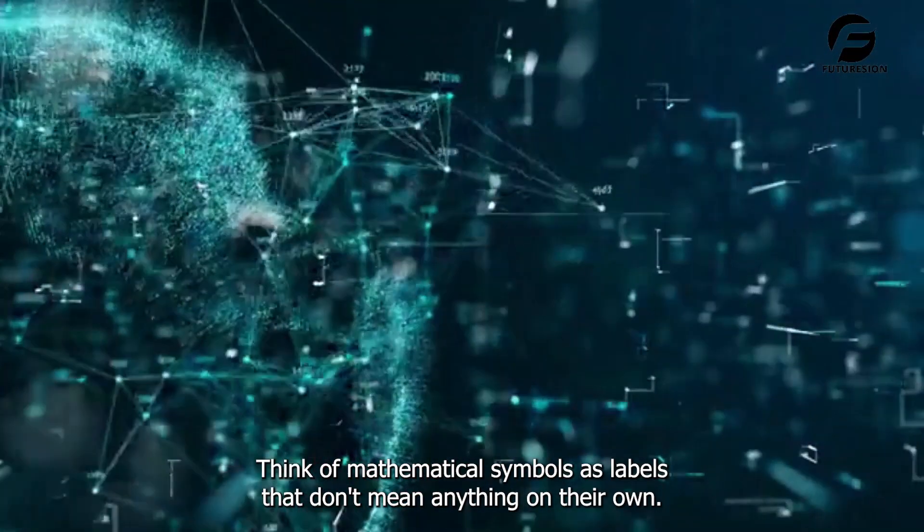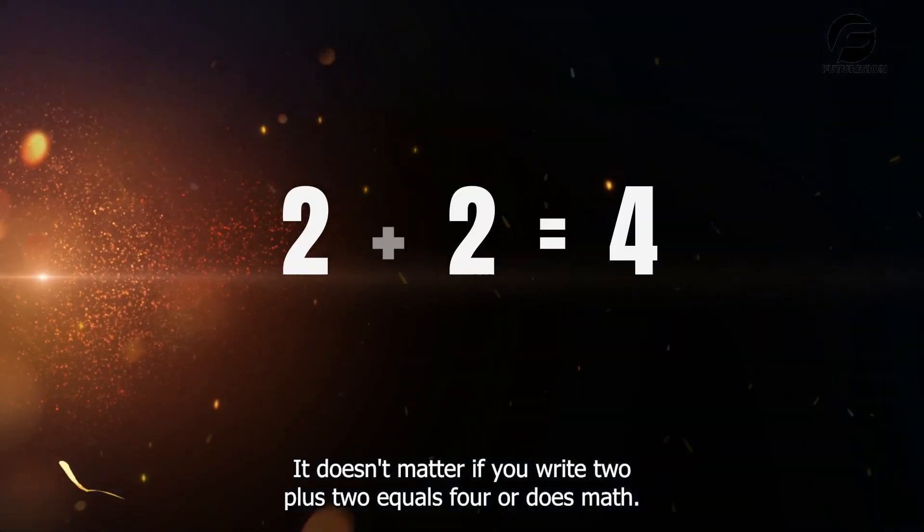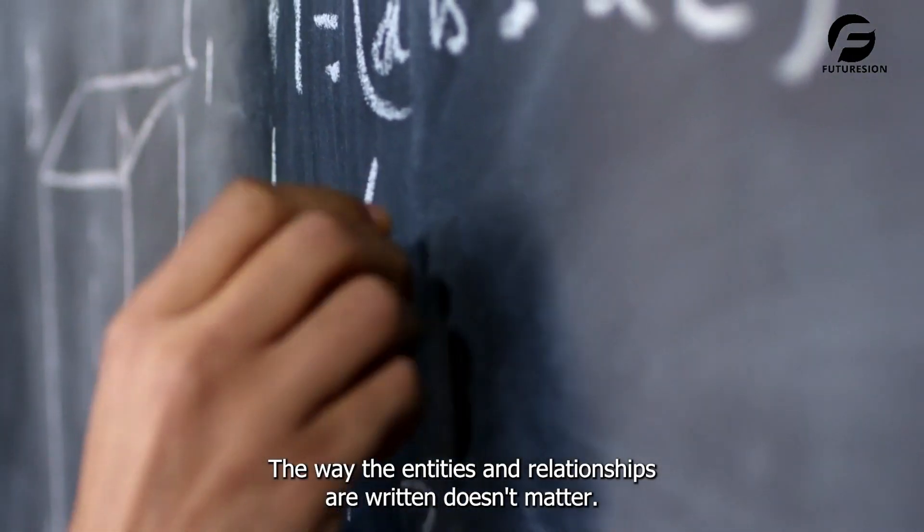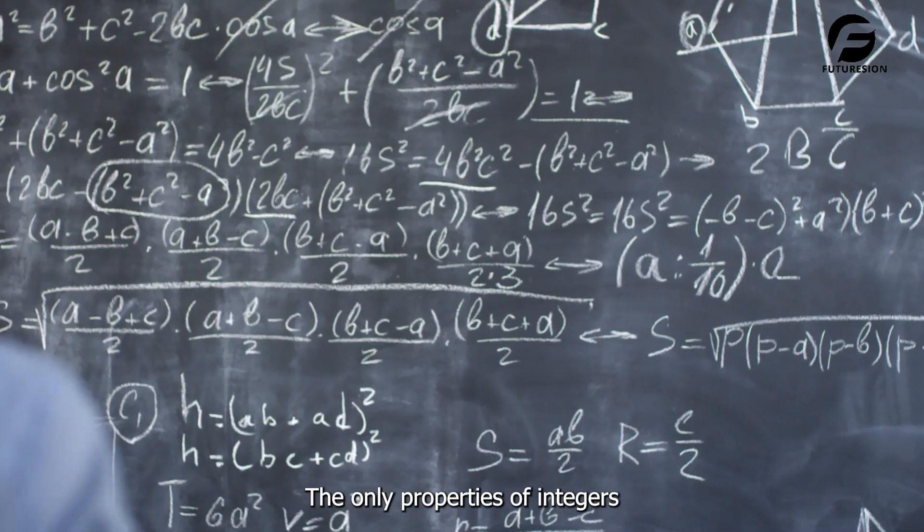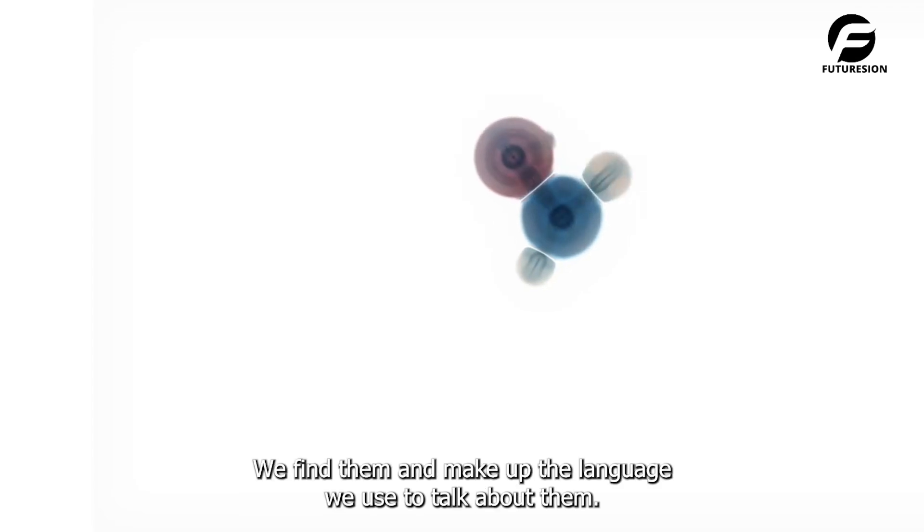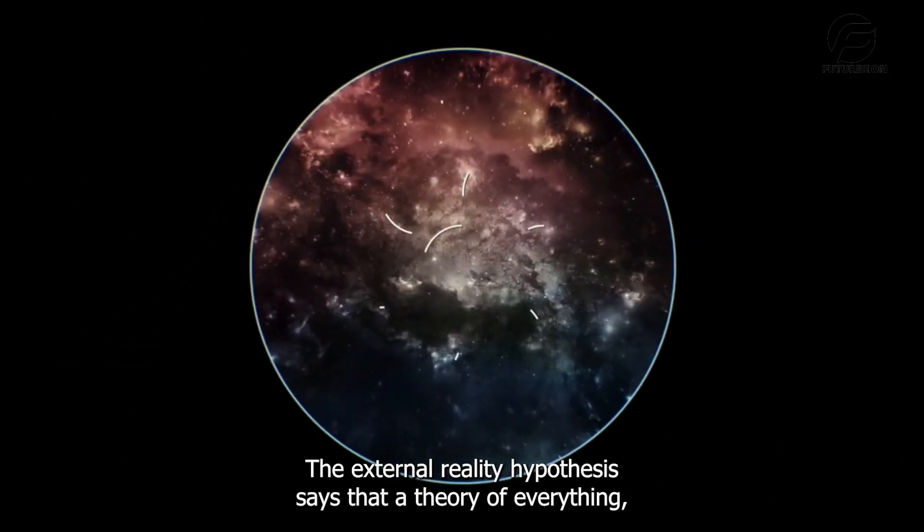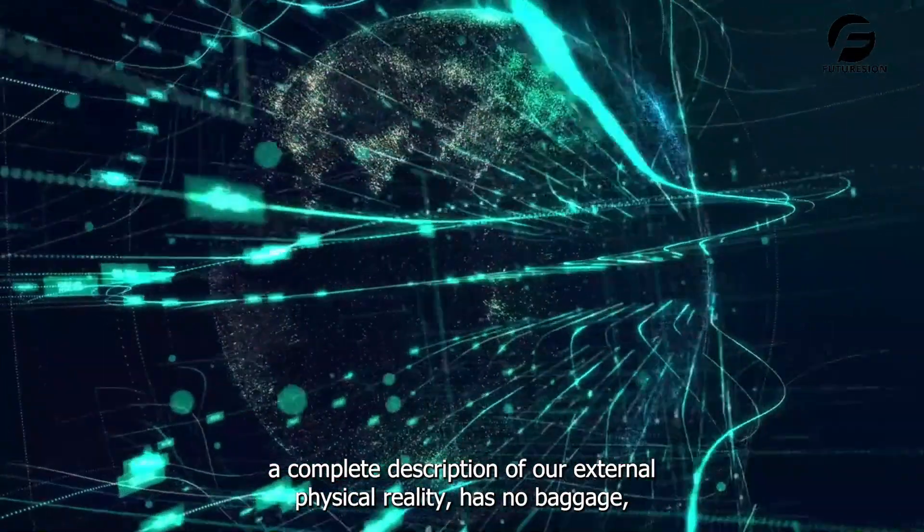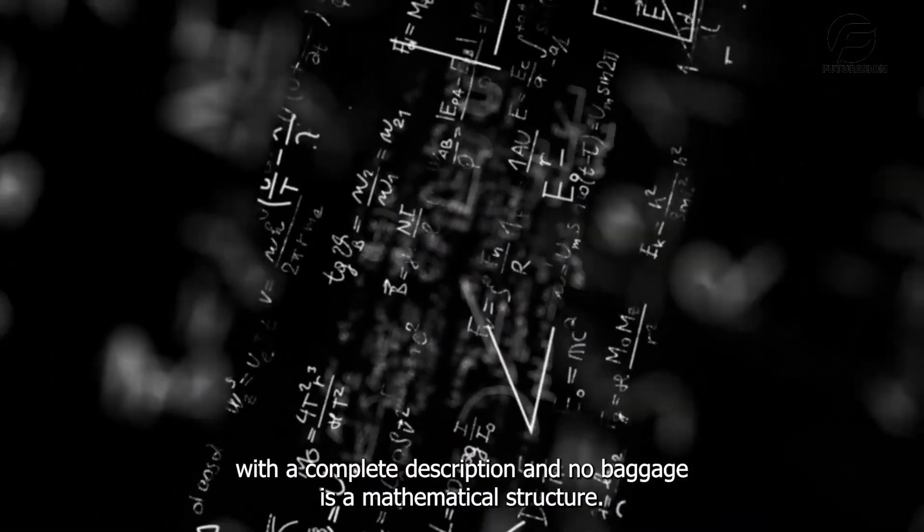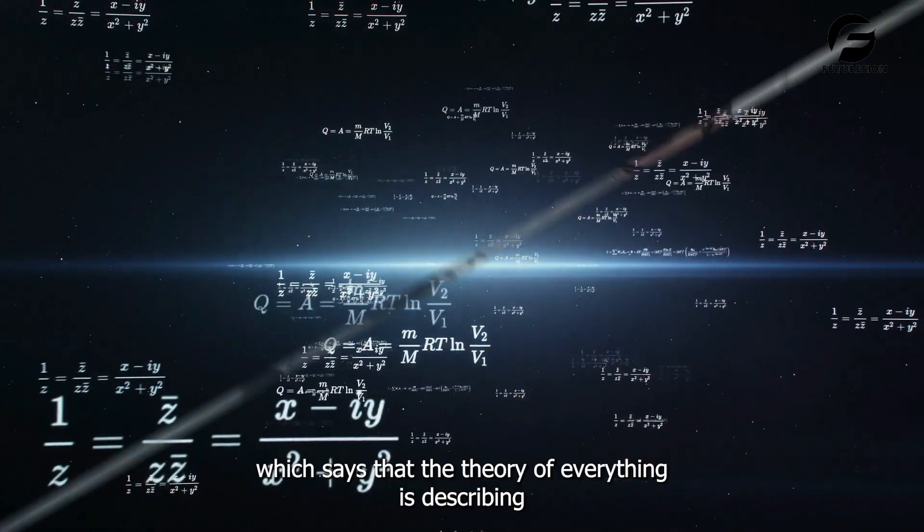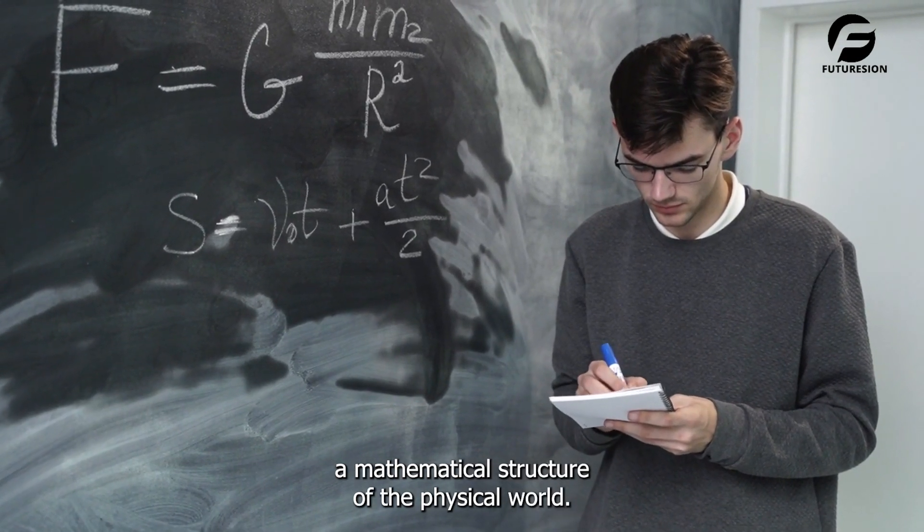Think of mathematical symbols as labels that don't mean anything on their own. It doesn't matter if you write 2 plus 2 equals 4, or 2 math dot igual a 4. The way the entities and relationships are written doesn't matter. The only properties of integers are those that are shown by the relationships between them. That is, we don't make up mathematical structures. We find them and make up the language we use to talk about them. In short, there are two main things to remember. The External Reality Hypothesis says that a Theory of Everything, a complete description of our external physical reality, has no baggage, and that something with a complete description and no baggage is a mathematical structure. All of this points to the Mathematical Universe Hypothesis, which says that the Theory of Everything is describing a mathematical structure of the physical world.